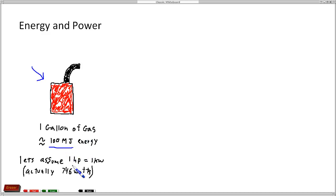We're also going to say that one horsepower is approximately equal to one kilowatt to make the math easier. In reality, one horsepower is 746 watts, but this will just help us with the math and help us do these calculations a little quicker.